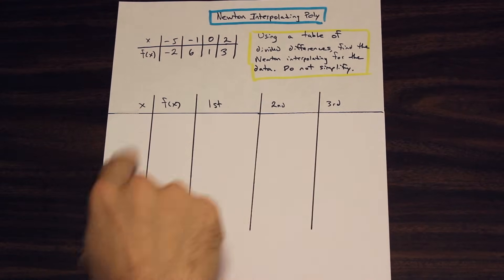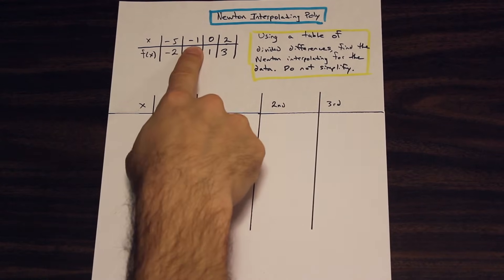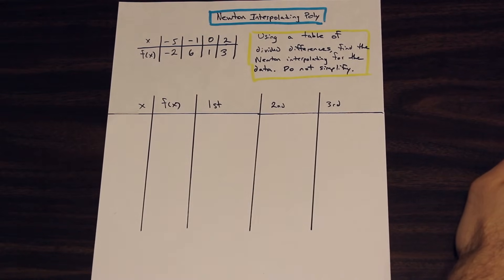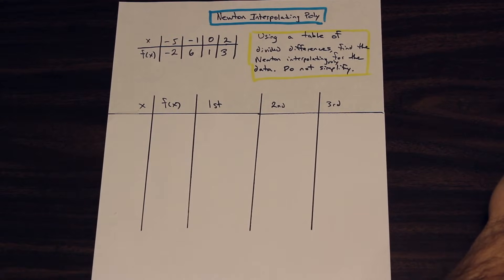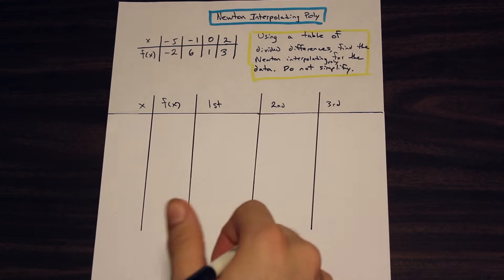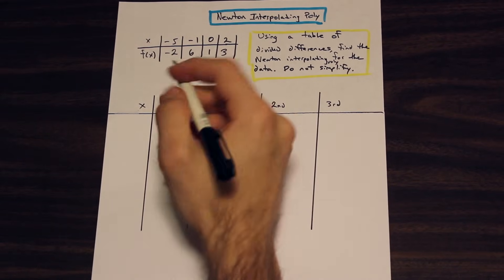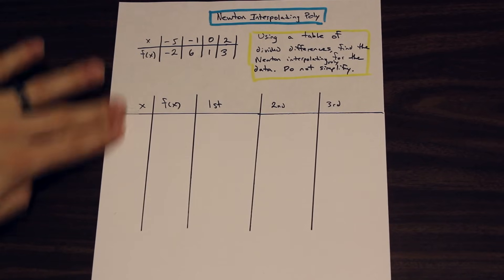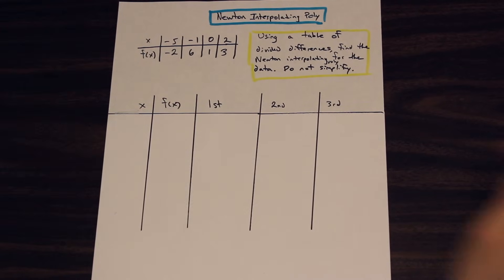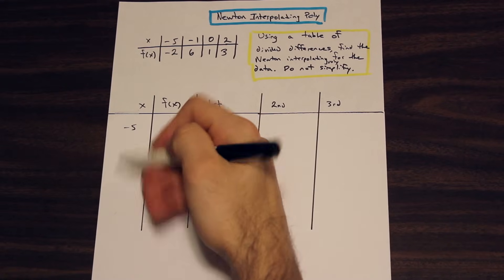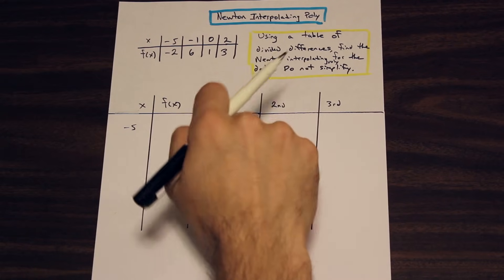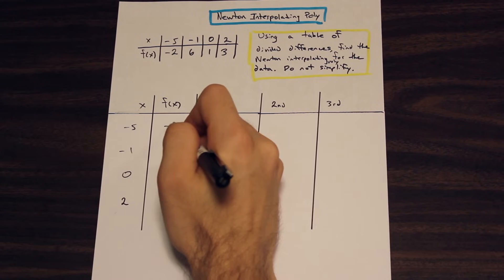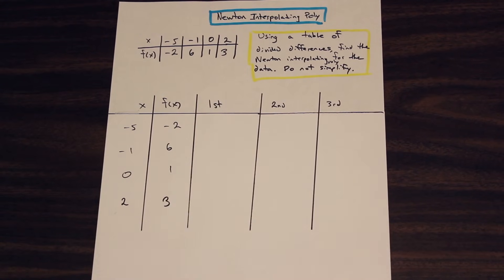We're going to do it using this table here. Since we have four data points, we're going to have to do three columns in our table of divided differences. The question asks: using a table of divided differences, find the Newton interpolating polynomial for the data — do not simplify. So we'll do the table first, then write the formula. The first step is to copy down our x and y values. So we have x values: negative 5, negative 1, 0, and 2. And for f(x), we have: negative 2, 6, 1, and 3.